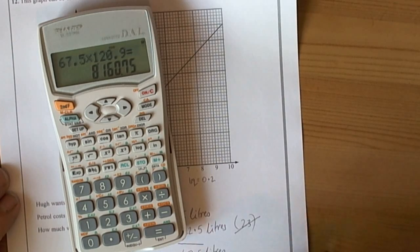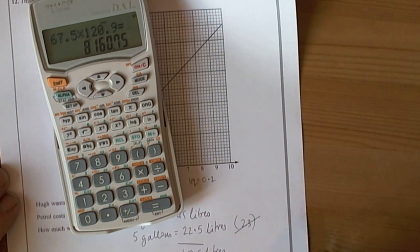Now we have got to ask ourselves what is sensible to write down as the final answer here. It wouldn't be sensible to say that this is 8,160.75.